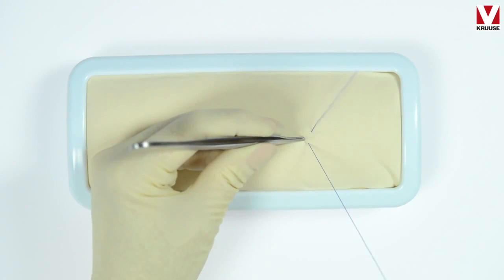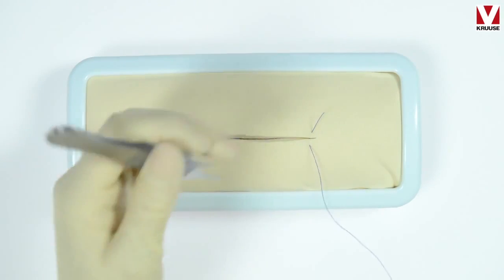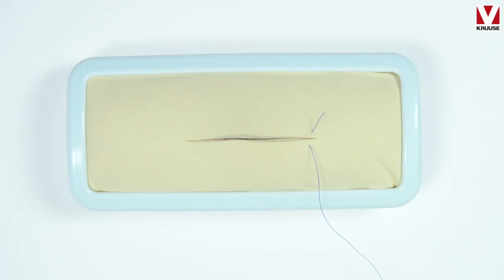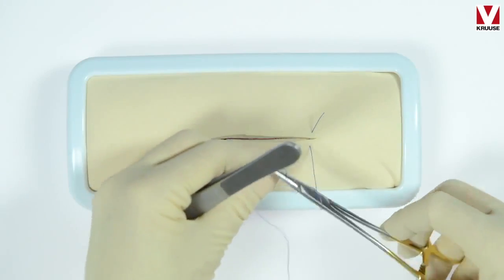You start with a normal suturing knot on each side, then you will make a 2-1-1 throw, as you see it here.